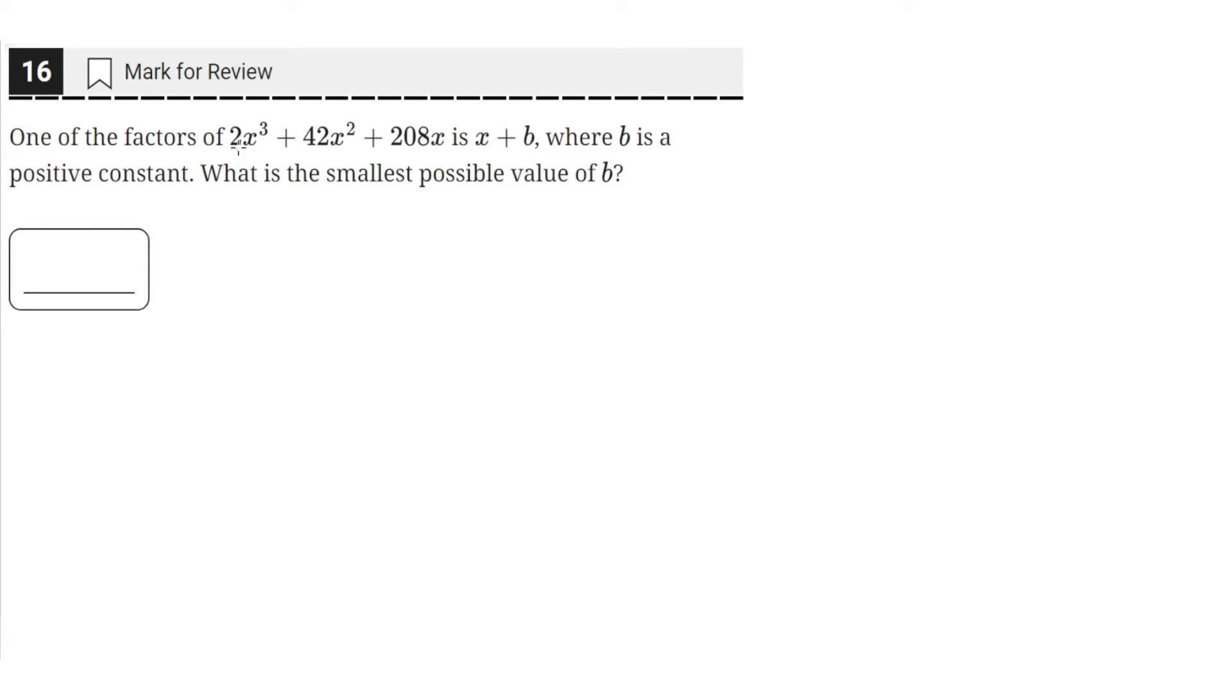One of the factors of 2x cubed plus 42x squared plus 208x is x plus b, where b is a positive constant. What is the smallest possible value of b?